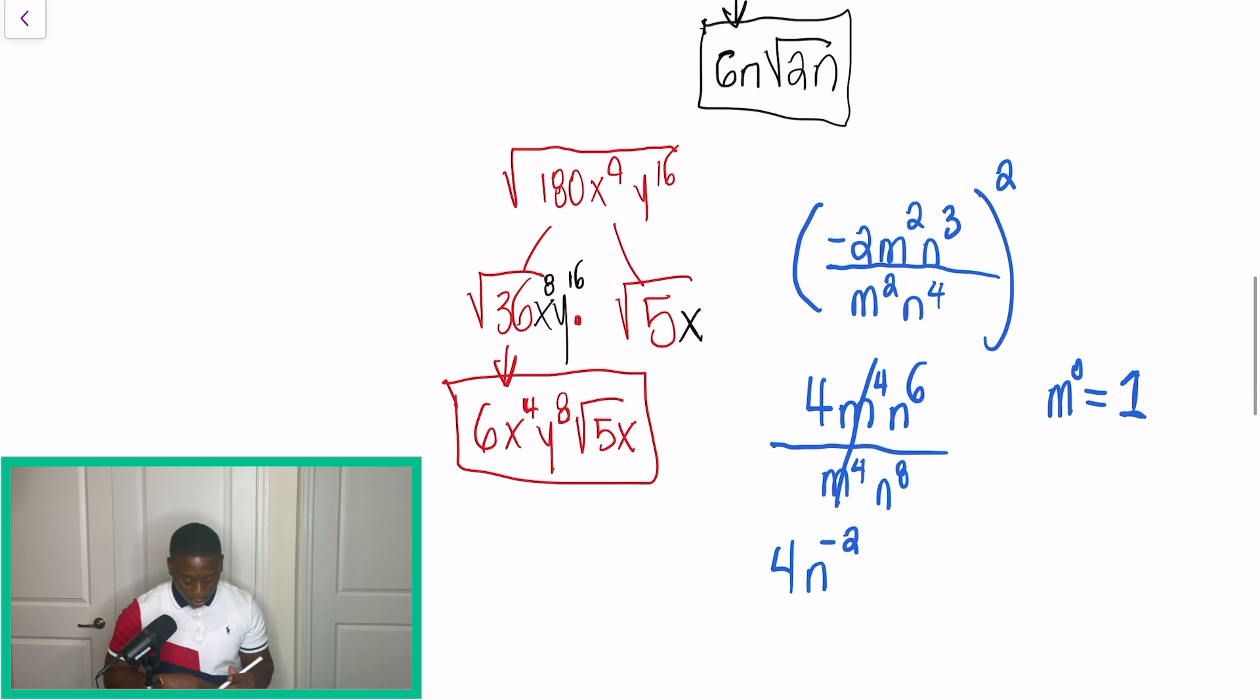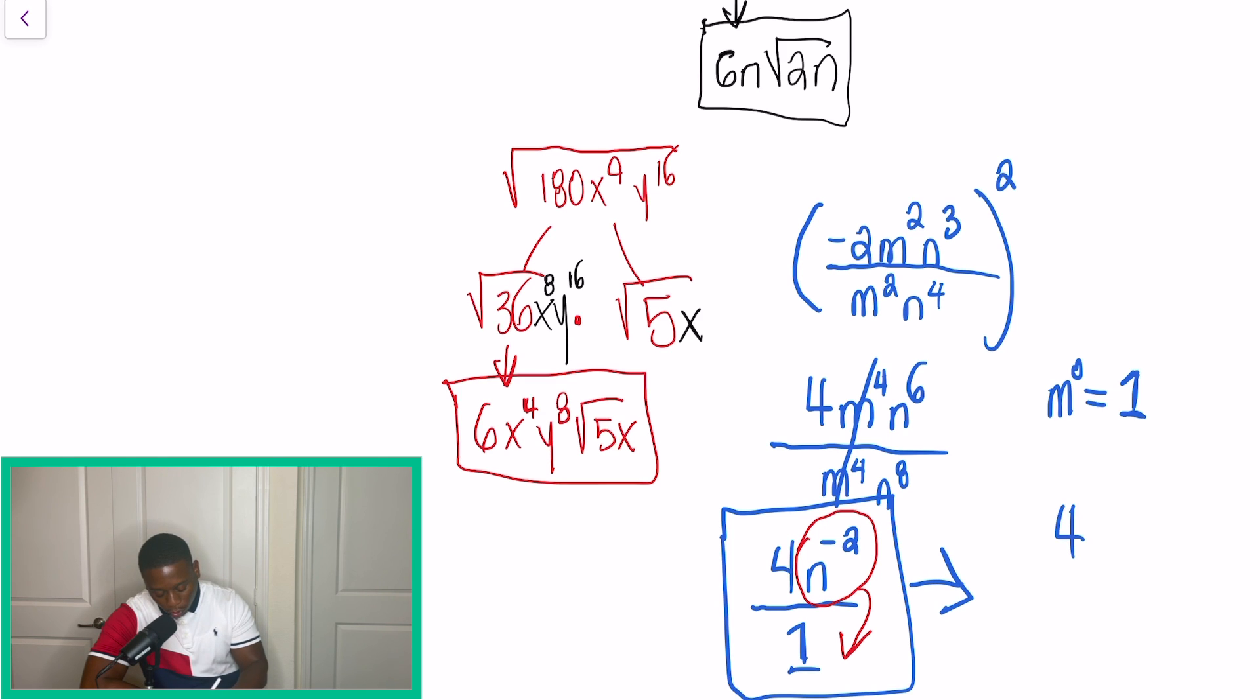But we know that our exponents cannot be negative. So what we need to do is we're going to turn this into a fraction. So I box it off, I turn it into a fraction, and now only N, only N to the negative 2 is going to go down to the bottom. We do not need to move 4. It's going to stay where it's at. So our final answer would be 4 over N to the 2nd power.